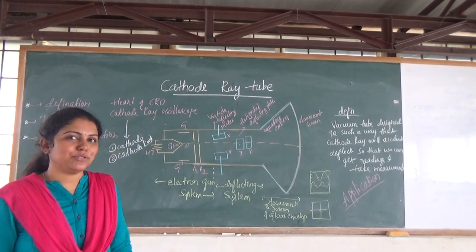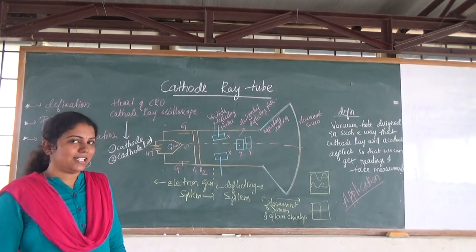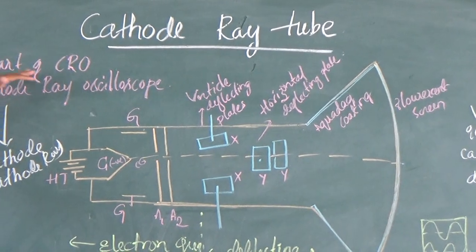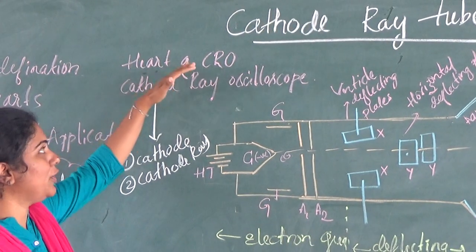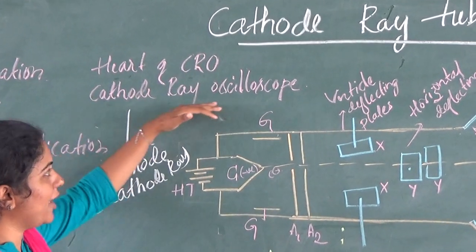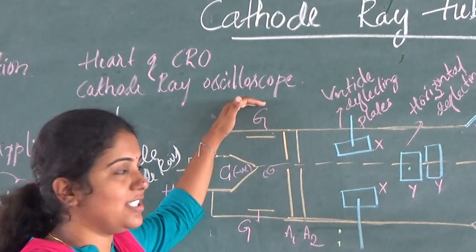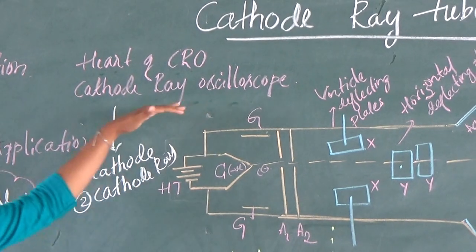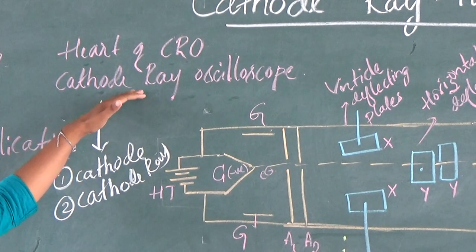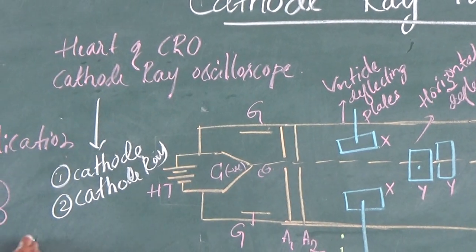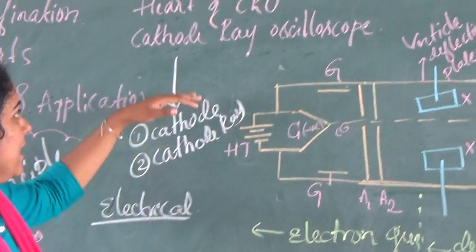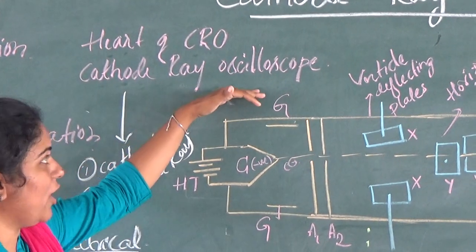Hi my dear students. Today we are going to discuss the topic: cathode ray tube. First, what is this cathode ray tube? It is the heart of the CRO — the cathode ray oscilloscope. You saw this instrument in the laboratory. It is a very important instrument which is used for electrical measurements, any electrical measurement.